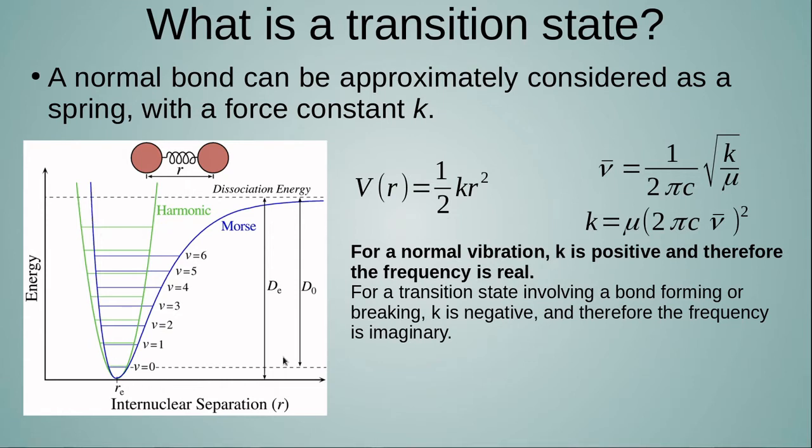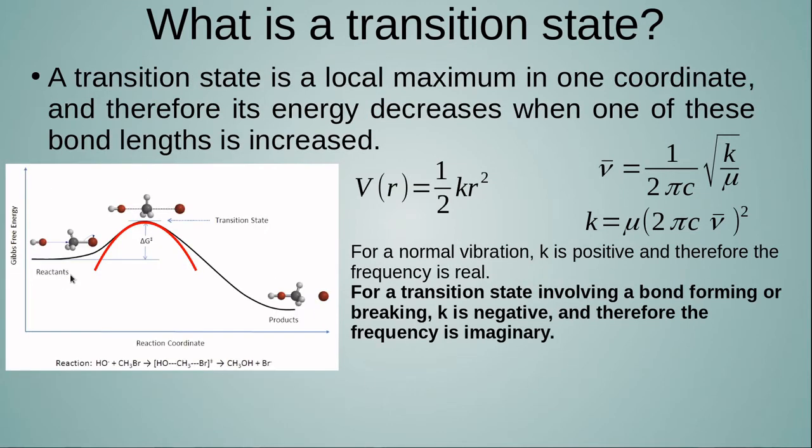These frequencies are measured by IR. Basically, for a normal vibration, k is positive, so the curvature of the potential energy is upwards, and therefore the frequency is real because the square root of a positive quantity is real. For a transition state, the curvature of the bond or the potential energy curve in that direction is negative, so k is negative, and therefore the frequency of the vibrational mode or other mode involved in the transition state is imaginary. That's why people talk about imaginary frequencies regarding a transition state.